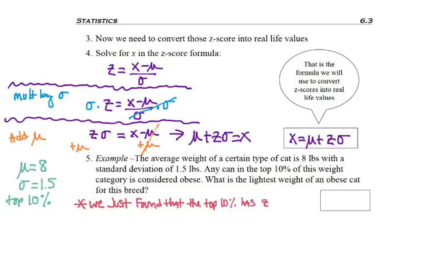We had just found that the top 10% has a z-score of 1.28. Normally I won't have just done that in the prior problem and I won't have it handy, but in this case we did.